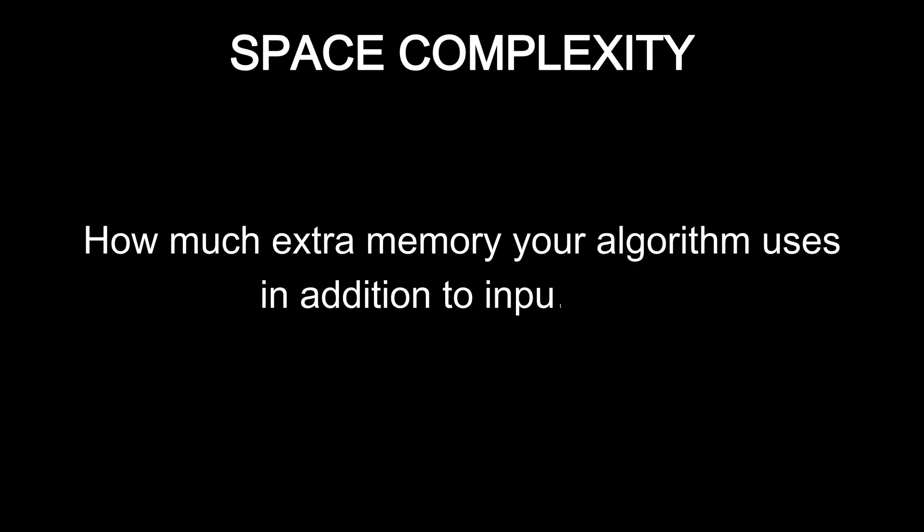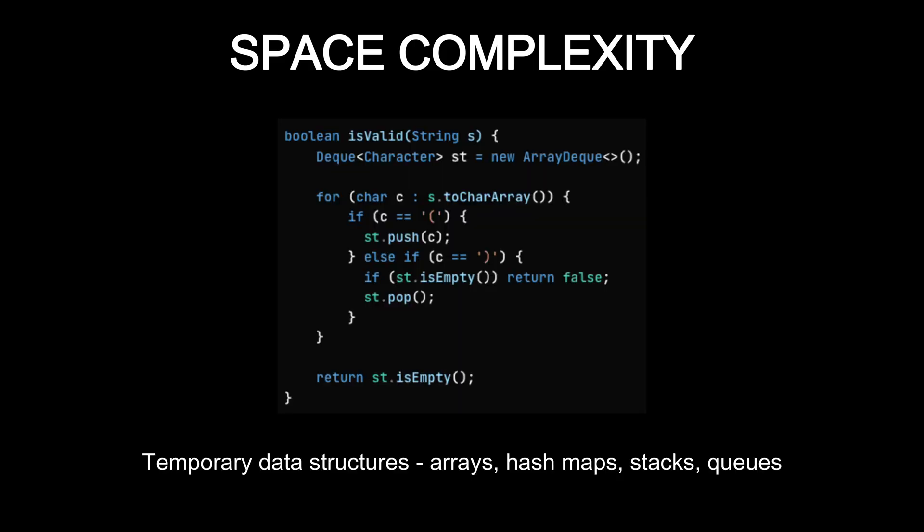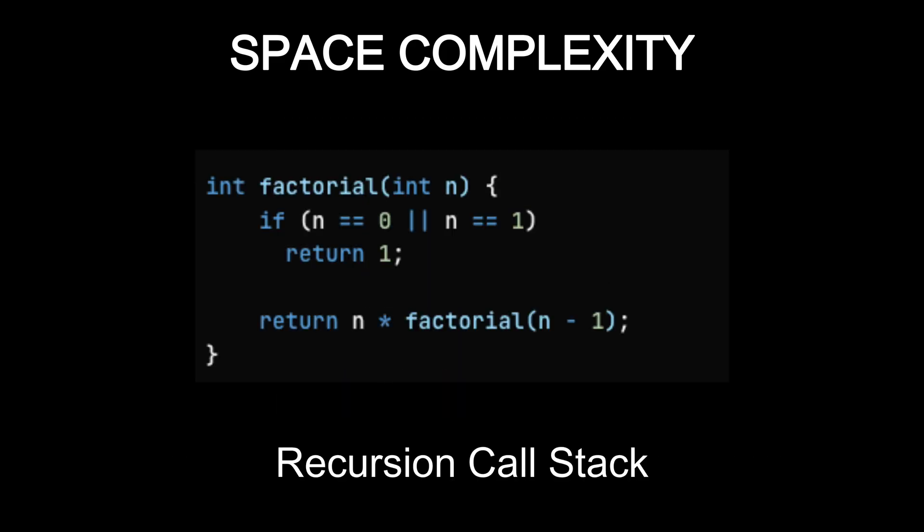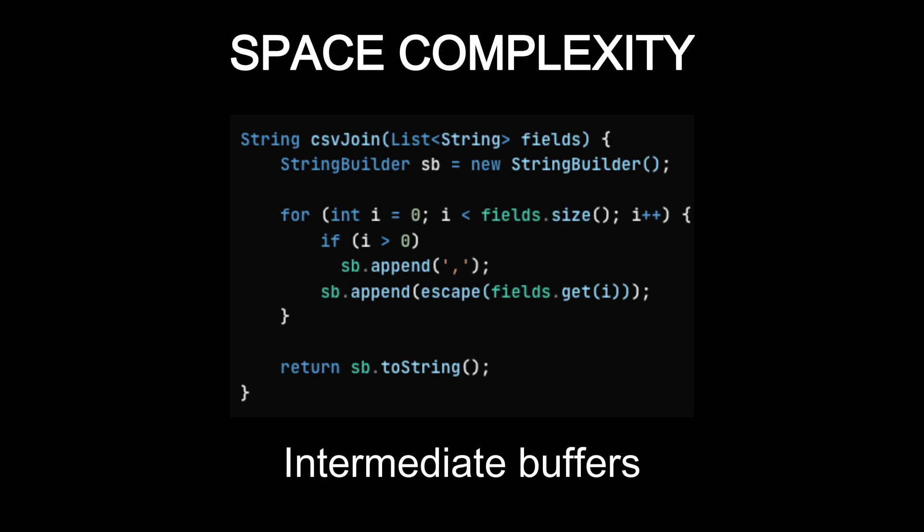So far, we have focused on time complexity. But Big O also applies to memory usage and that is called space complexity. Space complexity tells you how much extra memory your algorithm uses in addition to the input itself. This extra memory can come from temporary data structures like arrays, hash maps, stacks, queues, etc., recursion call stack frames, or intermediate buffers used during computation.